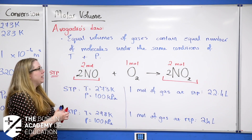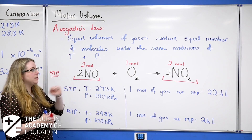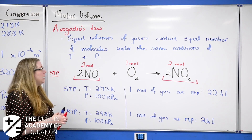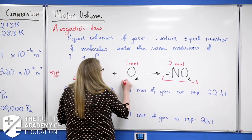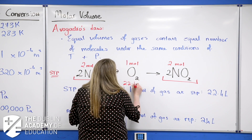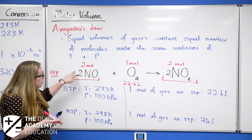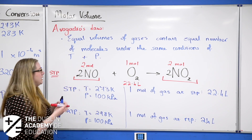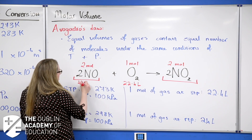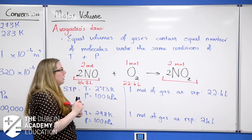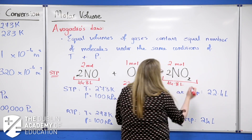Using the molar volume, one mole of any gas at STP occupies 22.4 litres — so that's the volume of the oxygen. We're using 2 moles of nitrogen monoxide, so the volume is twice that: 44.8 litres. And the same for nitrogen dioxide — it will also be 44.8 litres.